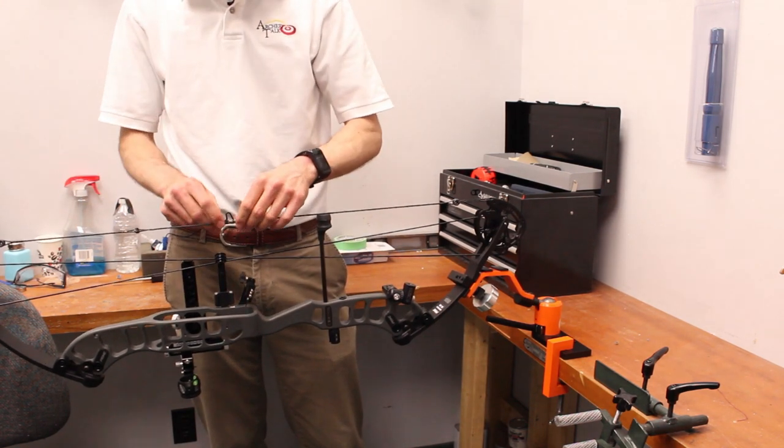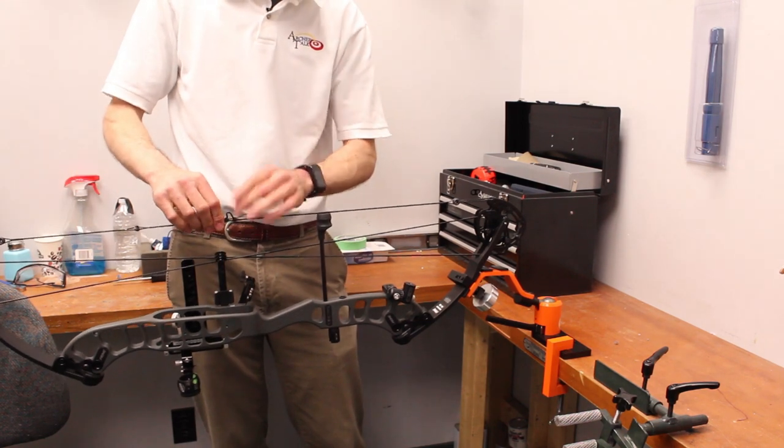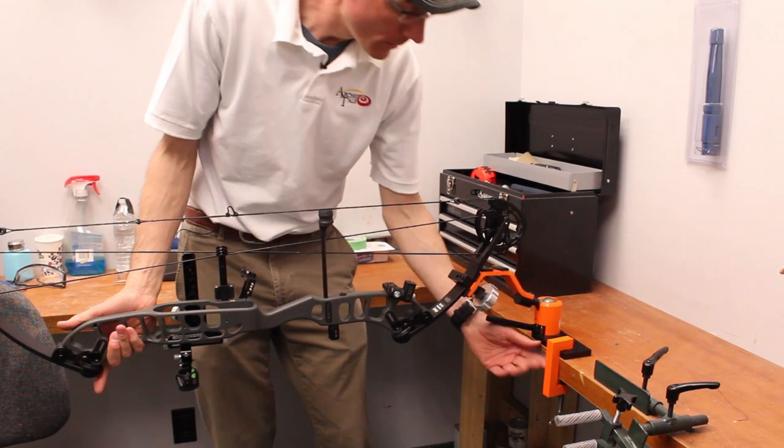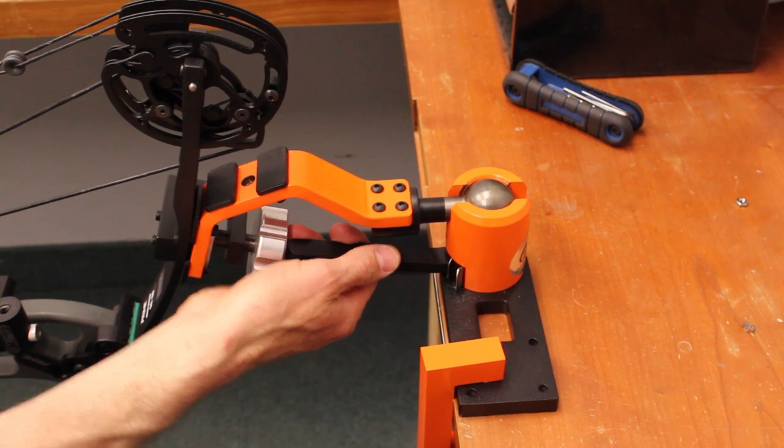And from here, you can tie in a peep, tie in a new D loop, whatever you need to do with your bow. It's all right here at your quick and easy disposal.